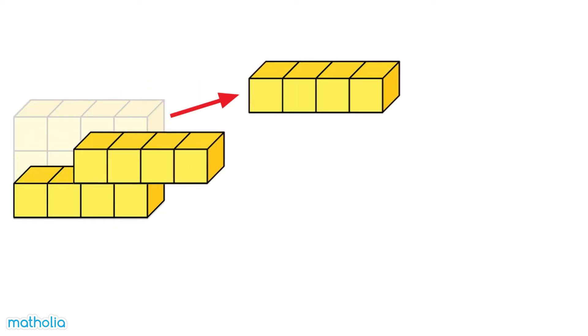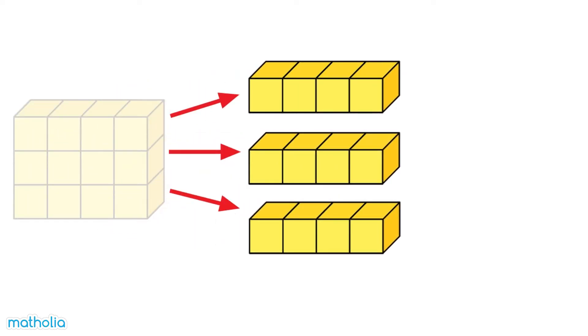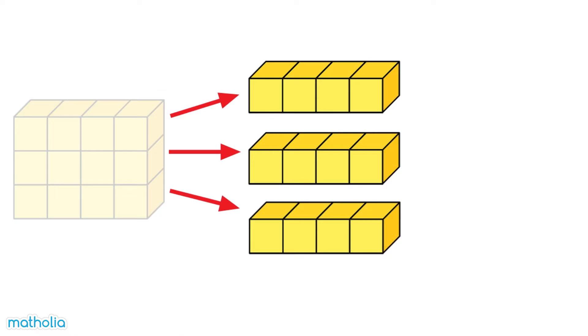Let's separate the prism into rows and count the unit cubes in each row. There are 3 rows and each row has 4 unit cubes. 3 times 4 equals 12. The prism is made up of 12 unit cubes. Its volume is 12 cubic units.